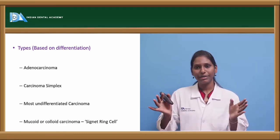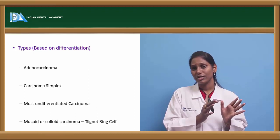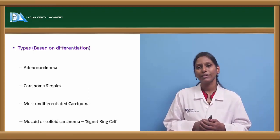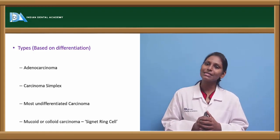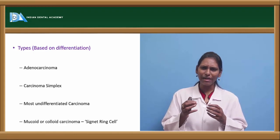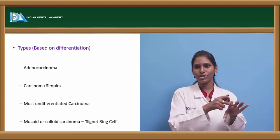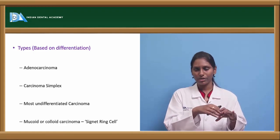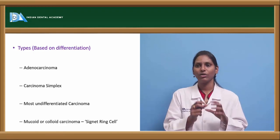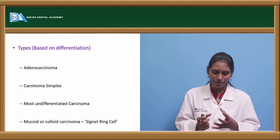Most undifferentiated carcinoma has highly undifferentiated cells, making it difficult to differentiate from squamous cell carcinoma — it has typical anaplastic features. Mucoid or colloid carcinoma is characterized by cells filled with mucus, which pushes the nucleus to one edge toward the cell membrane, giving a central pale mucus appearance with the nucleus at one end — resembling a signet ring. These cells are called signet ring cells and are the pathognomonic feature of mucoid or colloid carcinoma.